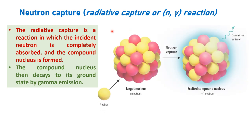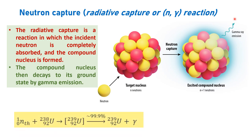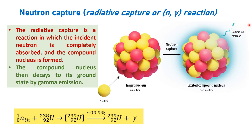What happens here is there is a neutron that is targeting a nucleus. This nucleus absorbs the neutron and that is why it is called a compound nucleus. This compound nucleus, which has temporarily absorbed the neutron, becomes excited or unstable. This nucleus then comes to the ground state by giving out radiation in the form of gamma rays, and the excited nucleus comes to the ground state.